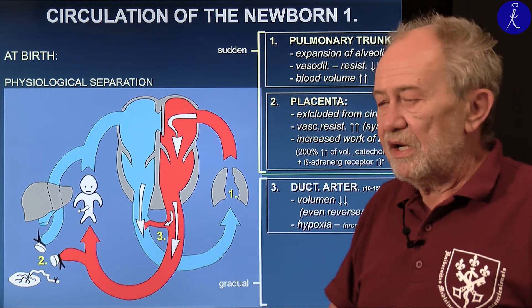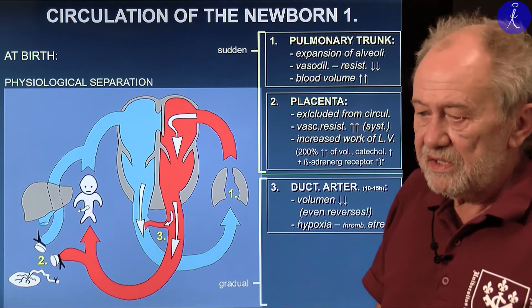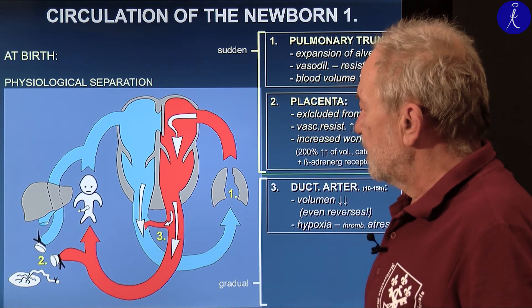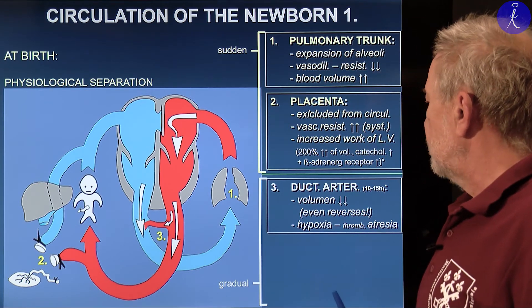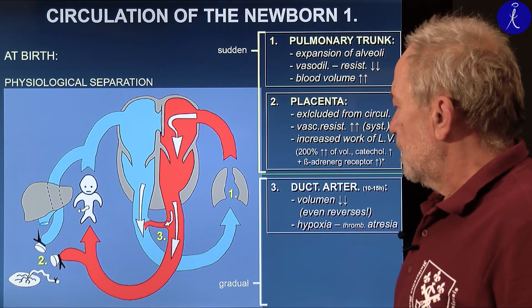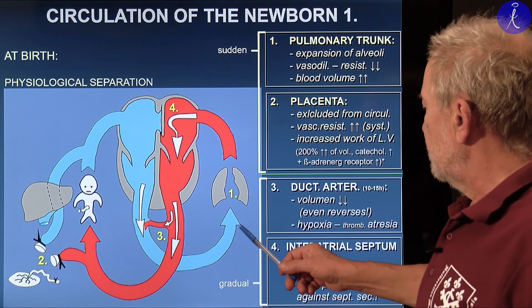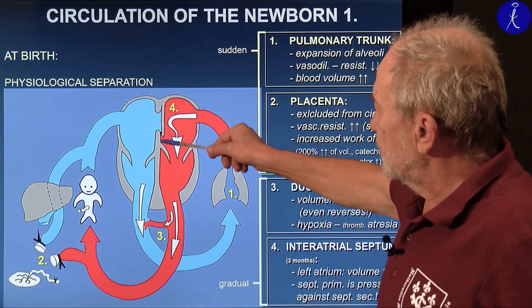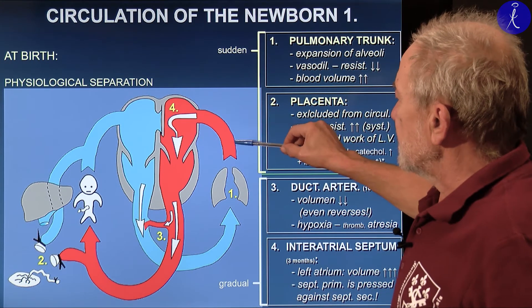Another thing happens gradually. The ductus arteriosus gradually closes — taking something like half a day. The volume of blood pumped through it is reduced or even reversed. Because of hypoxia, hypoxia causes smooth muscle contraction and gradual obliteration of the vessel. Another happening is that the septum primum and septum secundum, due to equalization of pressure on both sides of the foramen ovale, are pressed together, because the volume of the left atrium increases due to the high volume of blood coming into it.